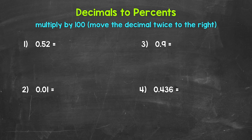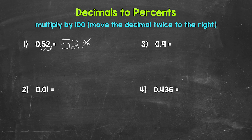For number one, we have 0.52, 52 hundredths. Let's multiply by 100 by moving the decimal once, twice to the right. This gives us 52 percent. We don't need the decimal at the end after the two when we write our percent, since this is a whole number. So 52 hundredths equals 52 percent.